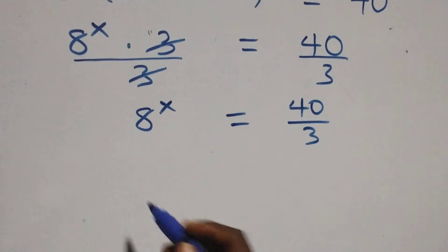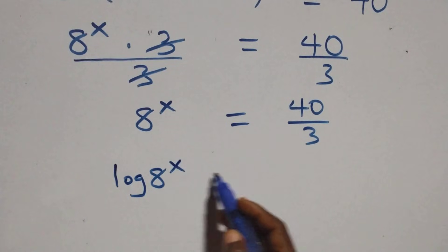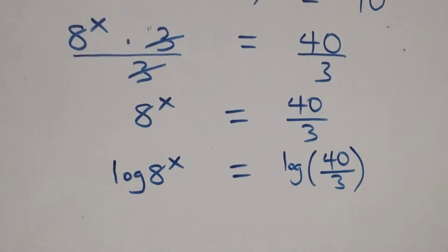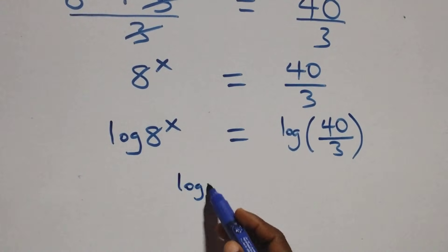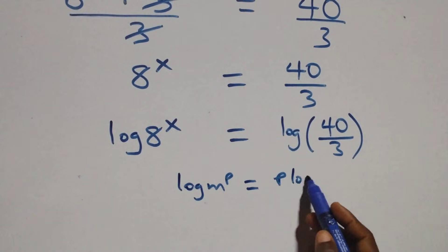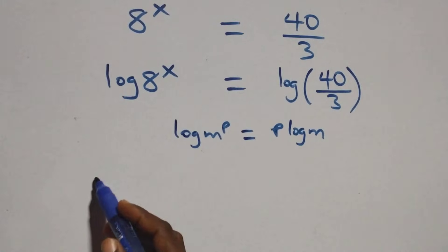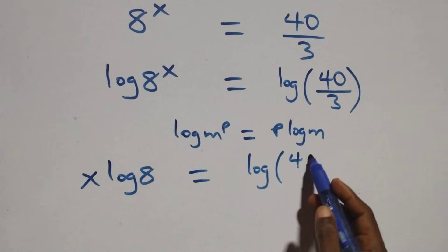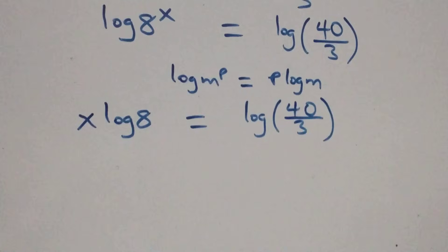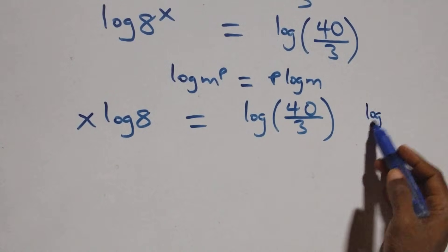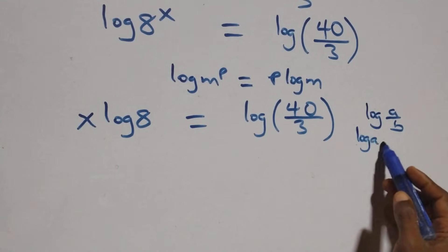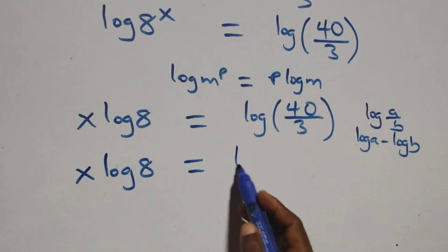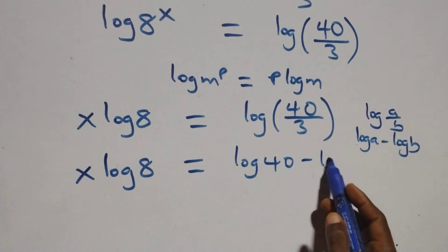Next, we take the log of both sides: log(8^x) equals log(40/3). We apply the power law of logarithm, where log(n^p) is the same as p·log(n), giving x·log(8) equals log(40/3). Then we apply the quotient law of logarithm: log(a/b) equals log(a) minus log(b), so x·log(8) equals log(40) minus log(3).